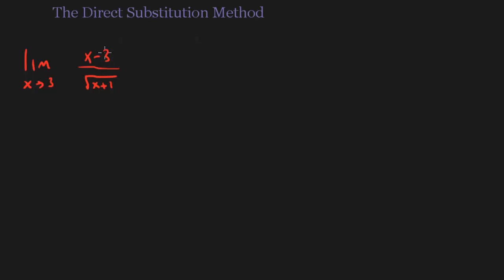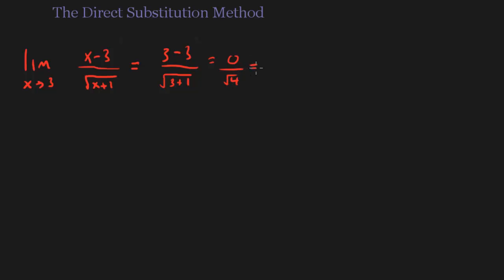In this example, we have this function and x is approaching 3. I have a radical on the bottom, but the only time this is really bad is when x is negative 1, and I'm not approaching negative 1. So let's go ahead and plug in 3. We're going to get 3 minus 3 over the square root of 3 plus 1. That's going to give me 0 over the square root of 4. That's just 0, so my limit is 0.